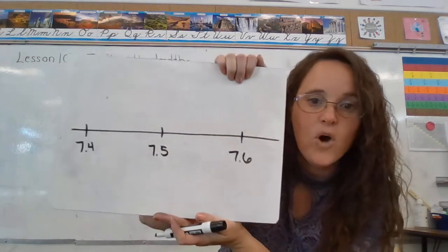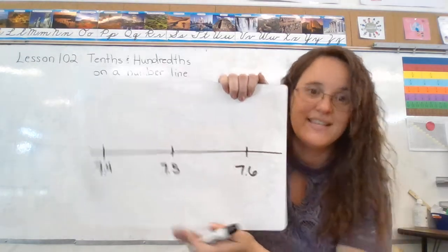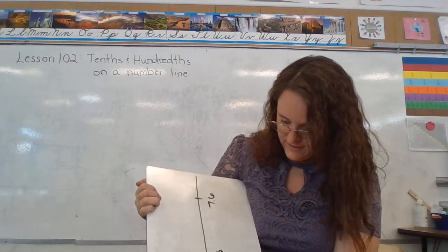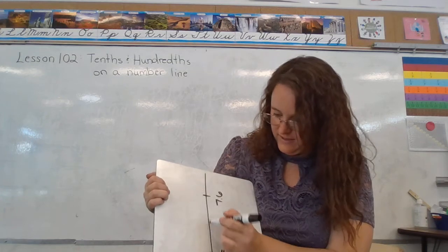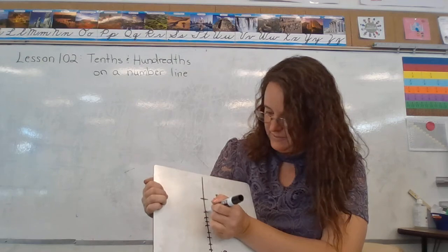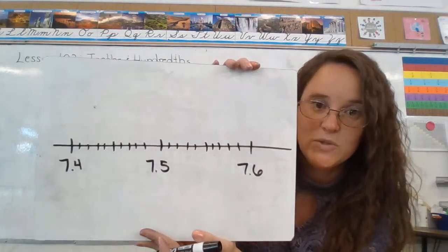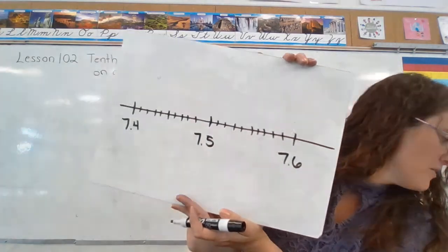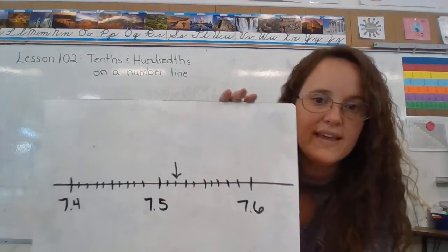And notice they don't have whole numbers labeled. They already have tenths labeled. And then in between each of those tenths is another set of 10 spaces. I didn't get it very even there, but let's assume each of those spaces is the same length.